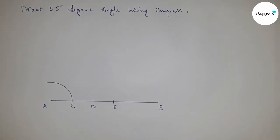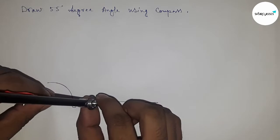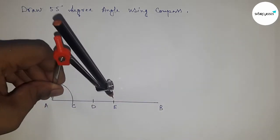So this is point C, and this is point D, and this is point E. Next, taking the length or distance between A and E by compass.